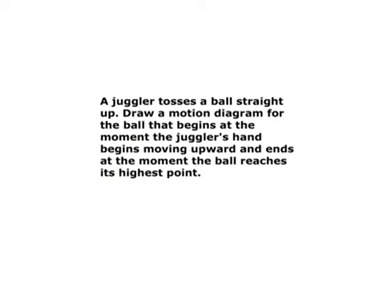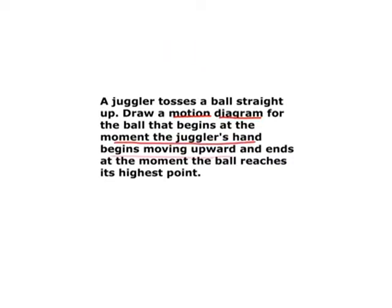A juggler tosses a ball straight up. Draw a motion diagram for the ball that begins at the moment the juggler's hand begins moving upward and ends at the moment the ball reaches its highest point. A motion diagram is a diagram that illustrates the important features of motion. The important things we need to know right now is where does the motion start and where does it finish.